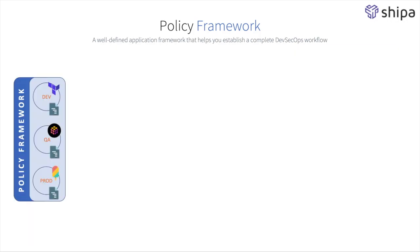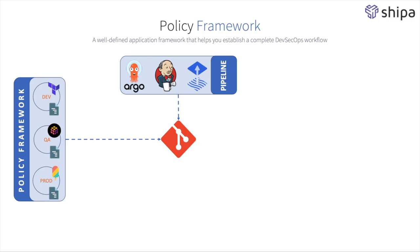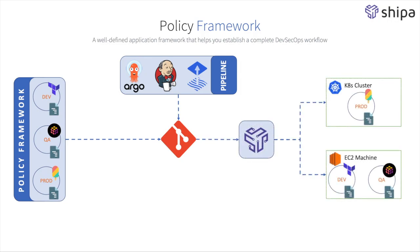You can define and store policies in Git, so your different pipelines can then trigger and manage those policies as part of your infrastructure management. As they communicate with your Shippa API, they can then bind these policies to your existing and new clusters, making it incredibly easy for you to evolve and scale infrastructure securely.